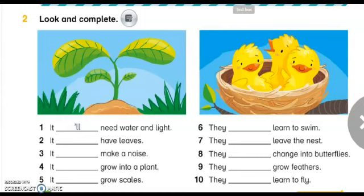In this activity we have to use will or won't to talk about predictions for these two pictures. Now let's complete the first sentence: It, and we have a space, need water and light.